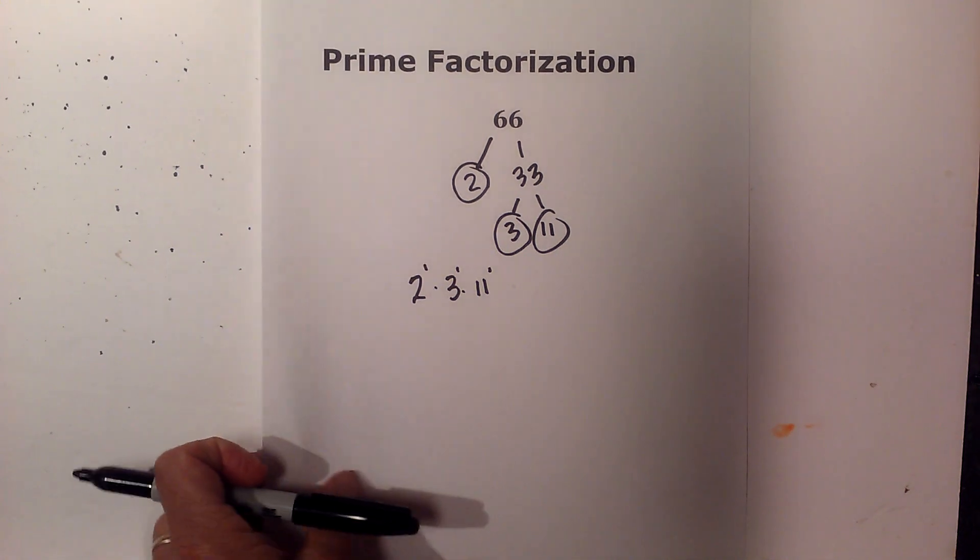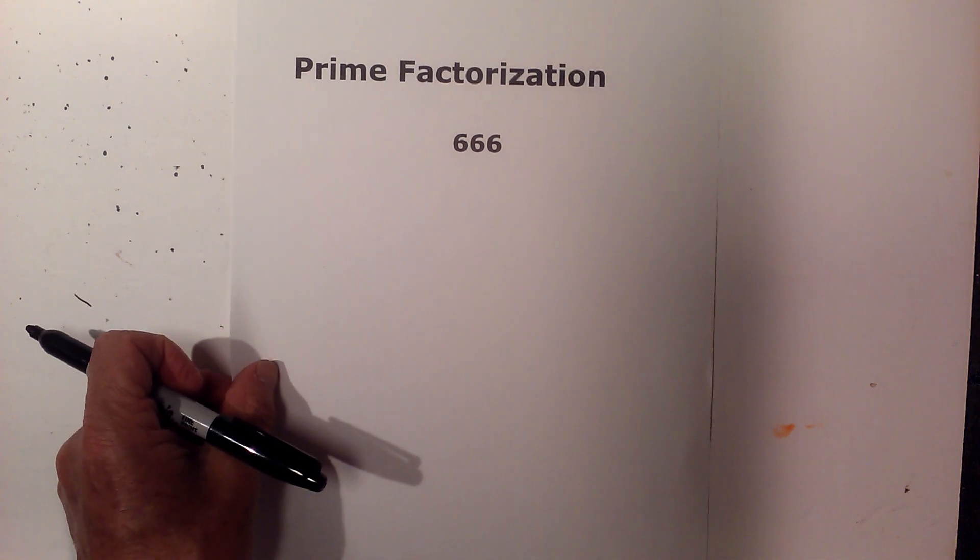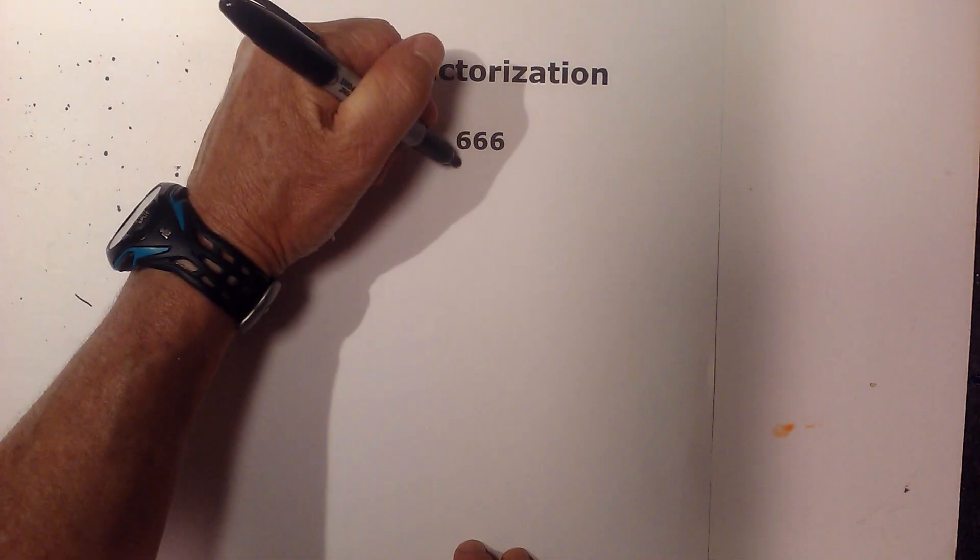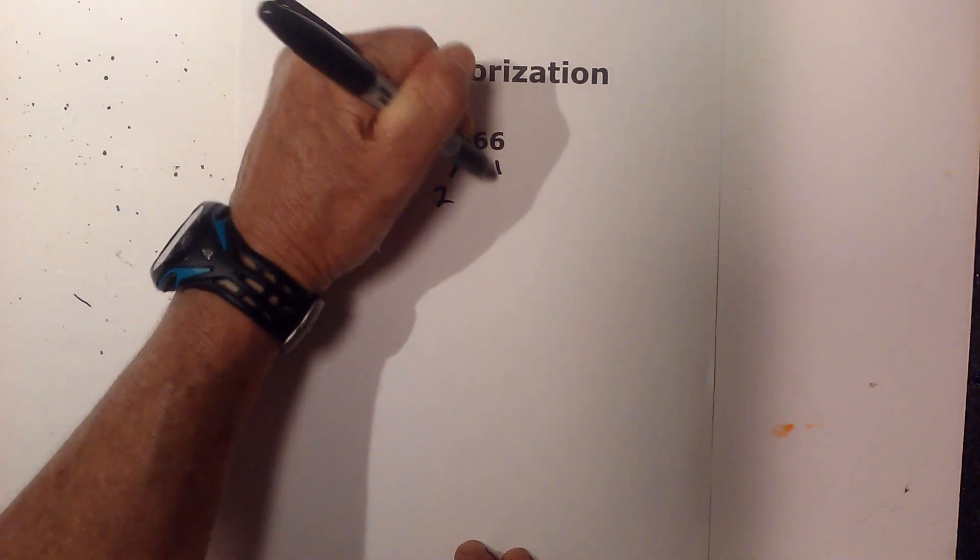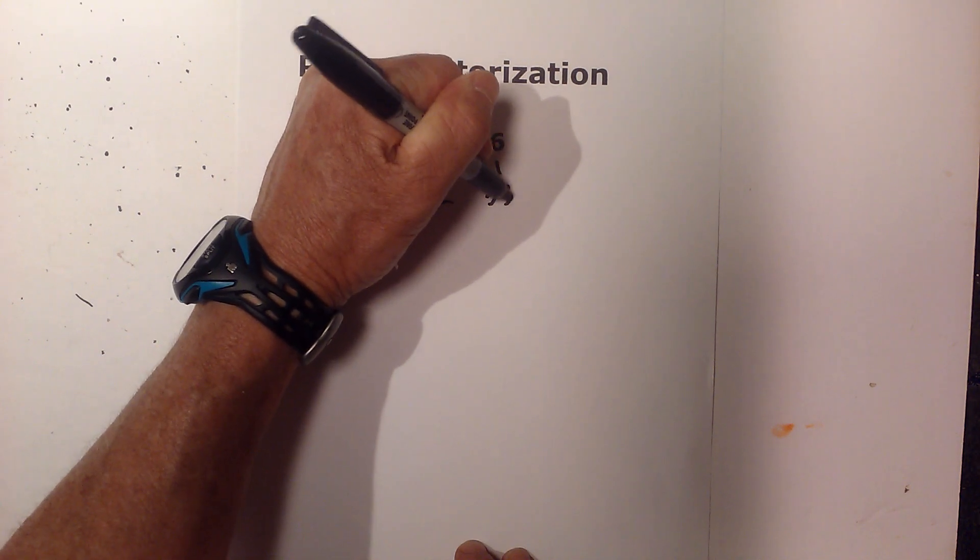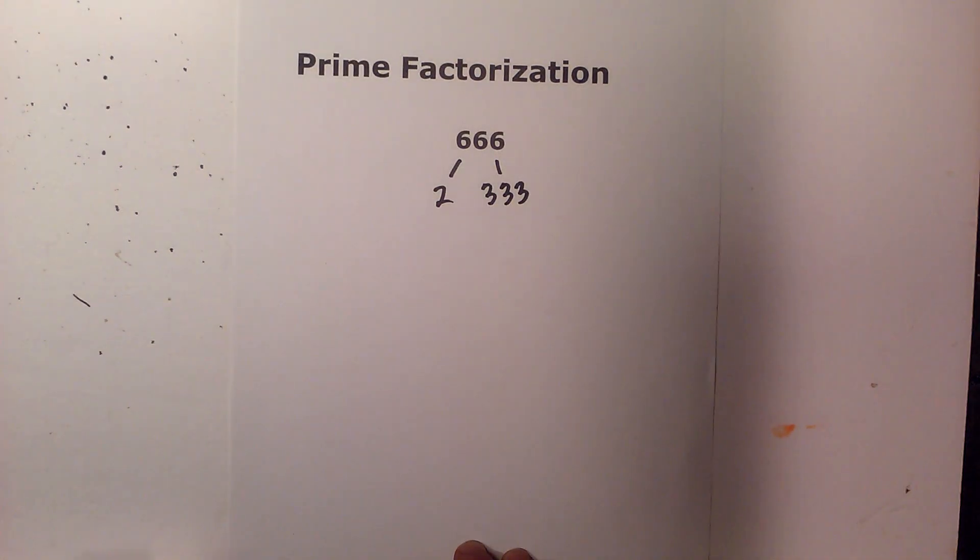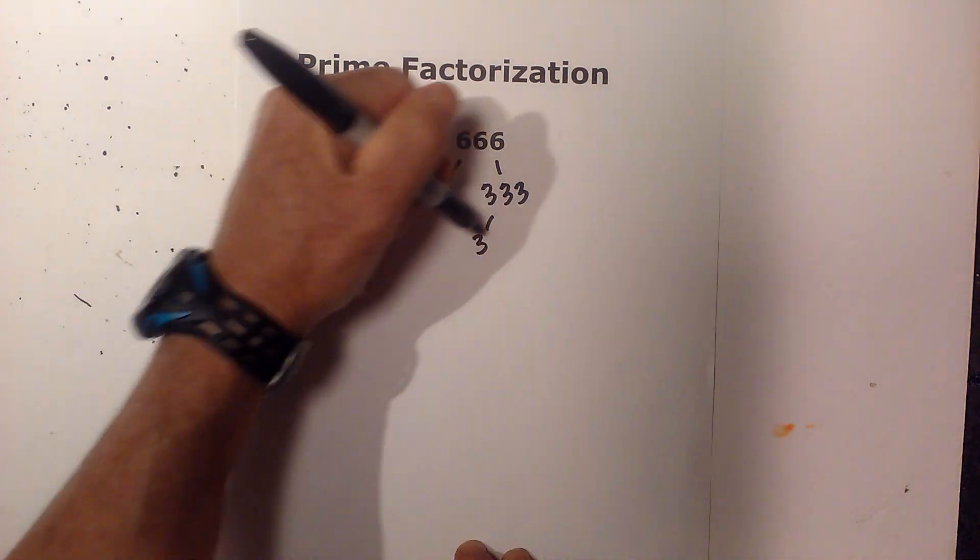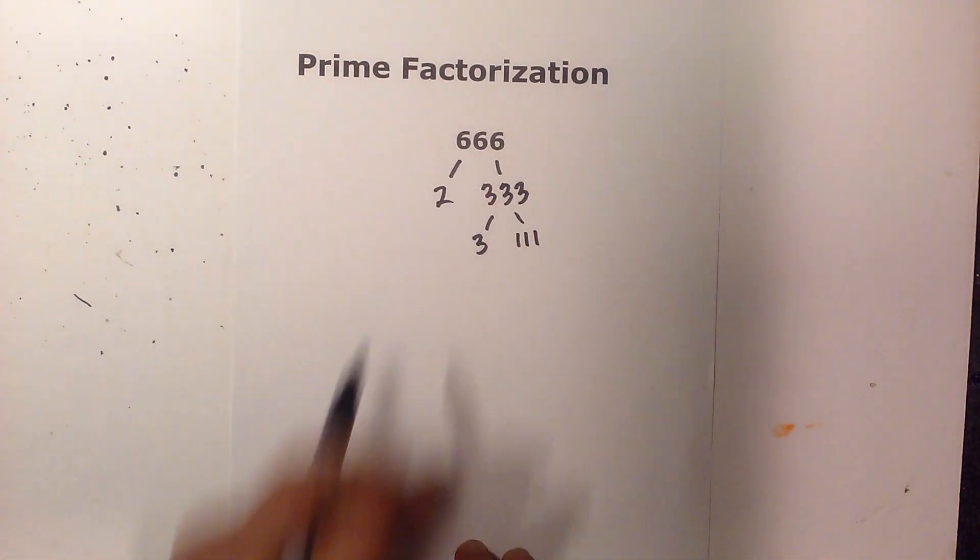Next let's get the prime factorization of 666. And what we do that first we have 2 times 333. And now we have 3 times 111.